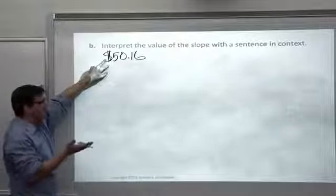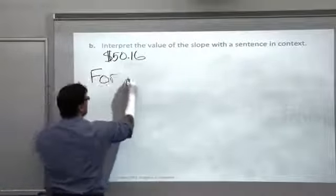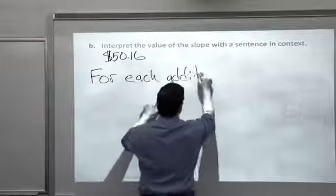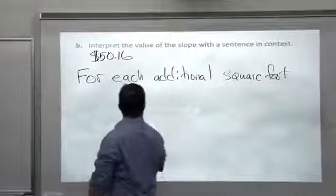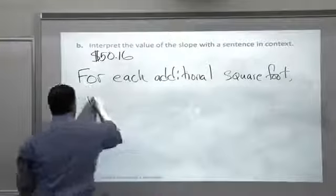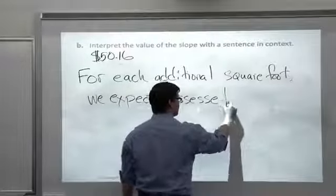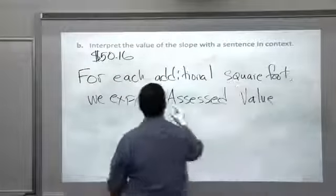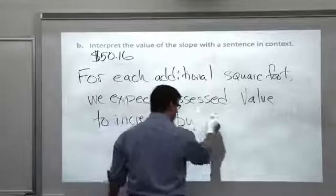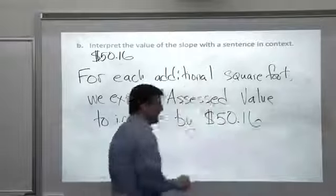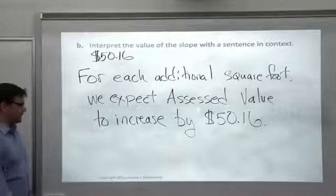One way to think: basically, in this neighborhood, every square foot is worth $50 in terms of a home's assessed value. We'll write that out. For each additional square foot, we expect assessed value to increase. Slope is positive. We expect assessed value to increase by $50.16. As X goes up by one, what happens to Y?